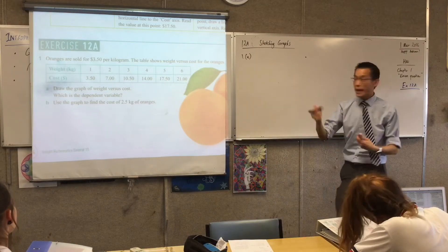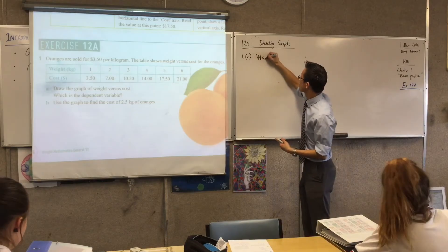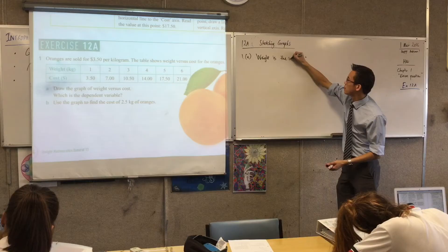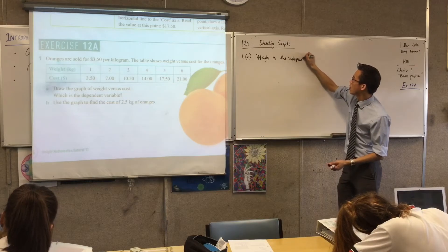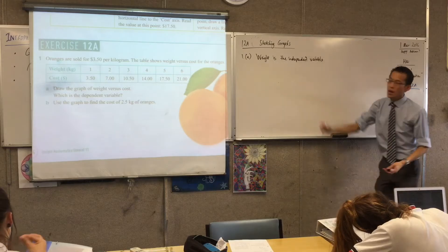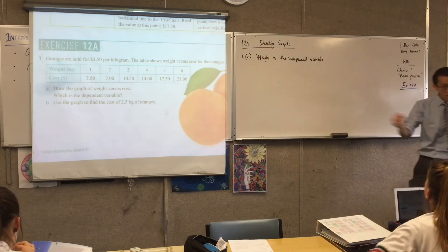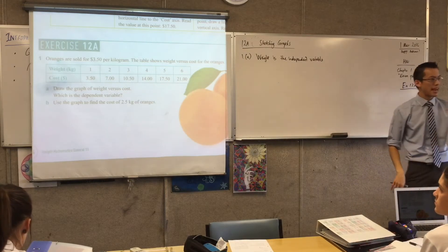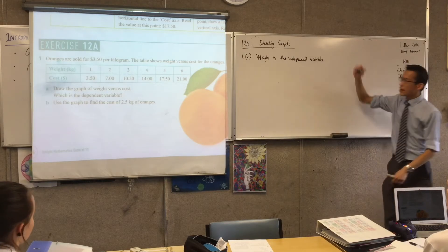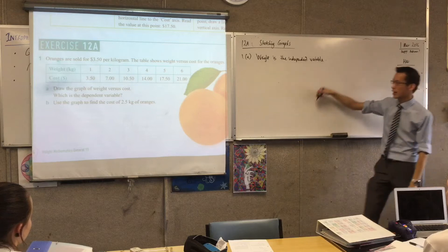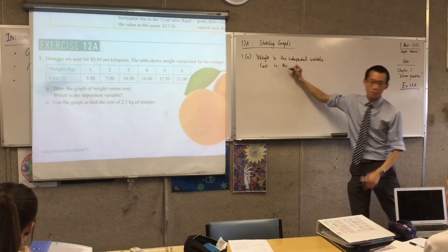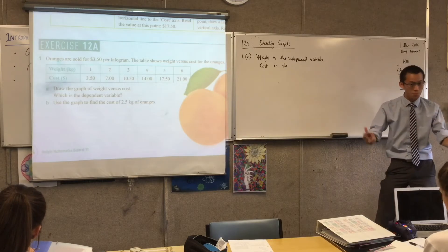We might write that down. Weight is the independent variable. That means that you can change it independently. You can muck about with it and make it any value you choose. That makes the other thing dependent on this. So I'm going to say cost is the dependent one because it depends on what weight you buy.